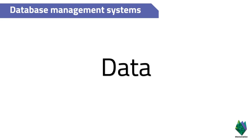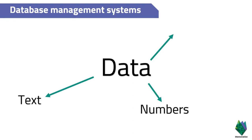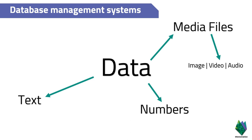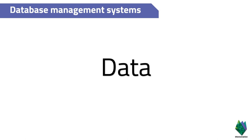For that person, the data becomes information because they now know where the washroom is — it was something meaningful to them. So data depends on the situation; it can be important or not important for someone. Now, what exactly is data in terms of computer science? Well, data could be text, a number, or a media file.